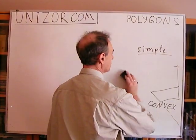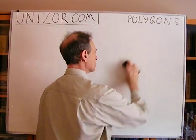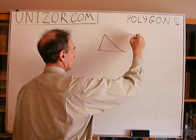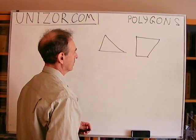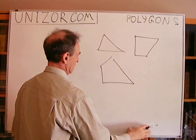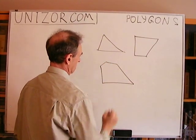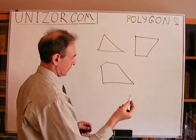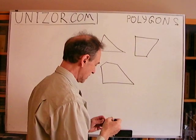As far as terminology related to the number of vertices and number of sides: we all know that a three-sided polygon is a triangle, four sides is a quadrangle, five vertices is a pentagon, and the next one is a hexagon, etc. It's all from Latin enumeration.